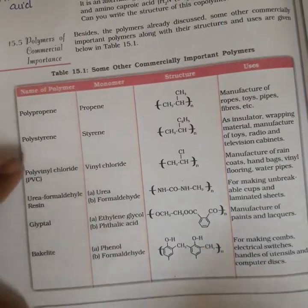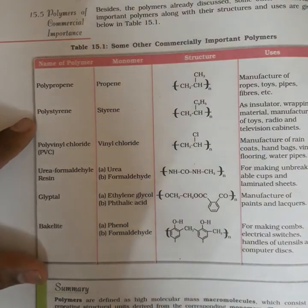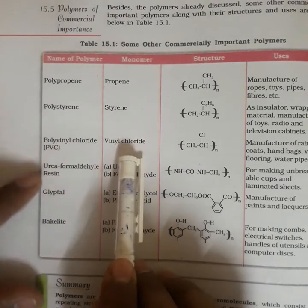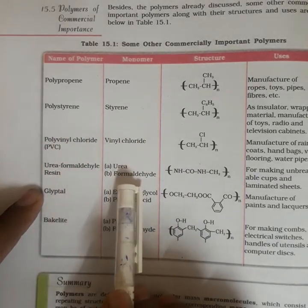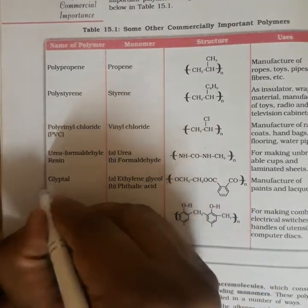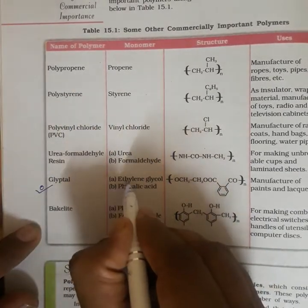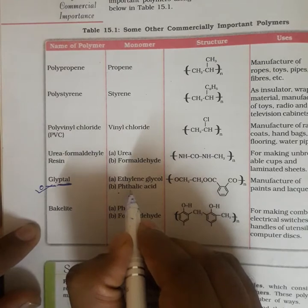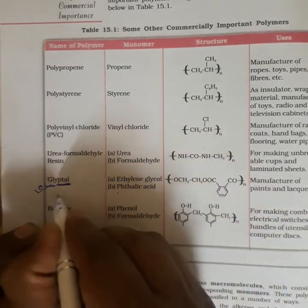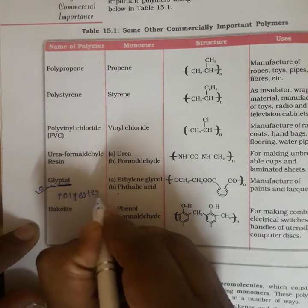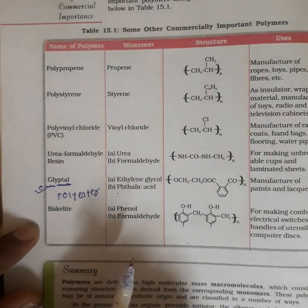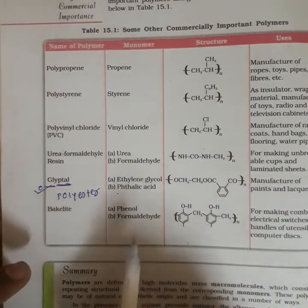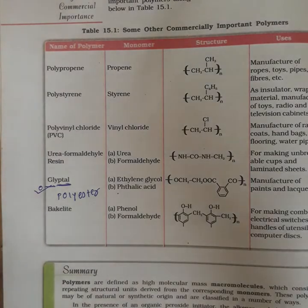Polystyrene is obtained from styrene, polyvinyl chloride from vinyl chloride, urea-formaldehyde resin from urea and formaldehyde. Glyptal is made up of ethylene glycol and phthalic acid — it is again a polyester class of polymer. Bakelite is made from phenol and formaldehyde resins. These are some of the most important polymers.